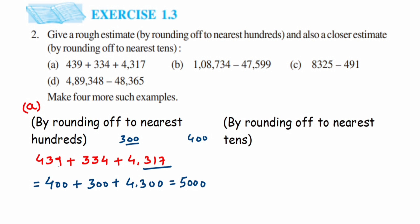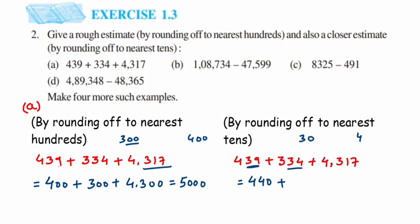Now we do the same for rounding to nearest tens. The question is 439 + 334 + 4317. For 439, we check the tens and ones: 39 lies between 30 and 40 but is much closer to 40, so 439 becomes 440. For 334, we check 34 — it lies between 30 and 40, but 34 is less than 35, so it rounds to 330.